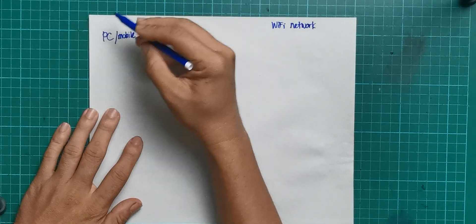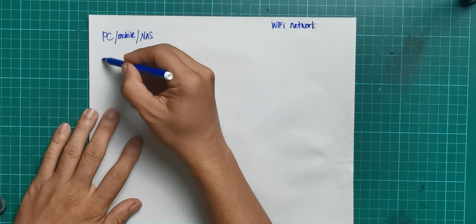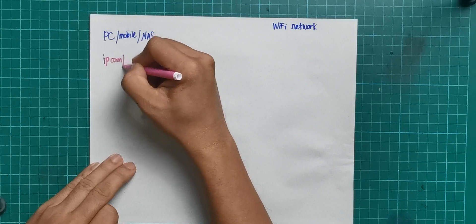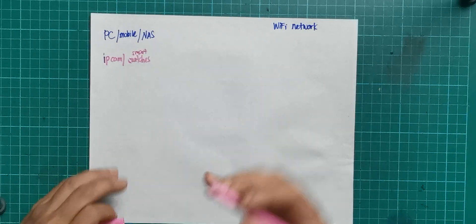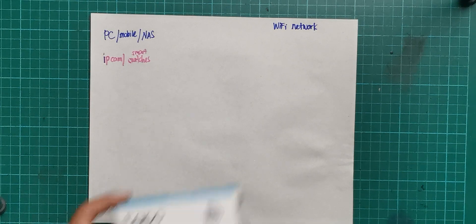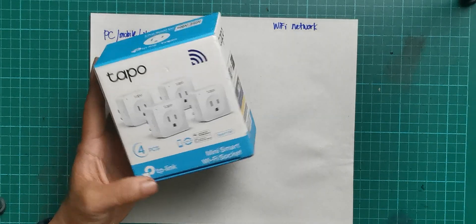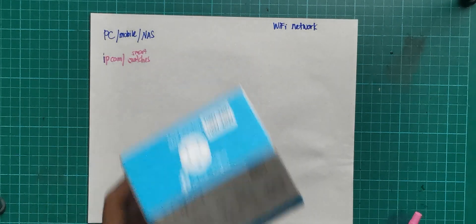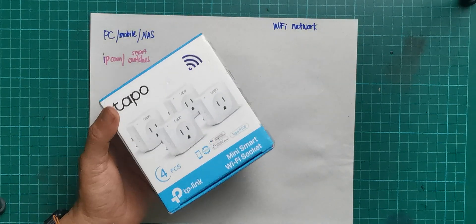I also have NAS — network attached storage — IP cameras, and smart switches that can be controlled via Wi-Fi. I use the TP-Link Tapo smart plugs to control my appliances through Wi-Fi, and from anywhere around the world as long as I'm connected to the internet I can turn off any appliances connected to the Tapo. This is not a sponsored video.